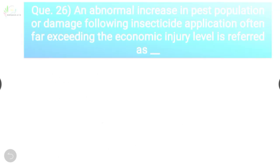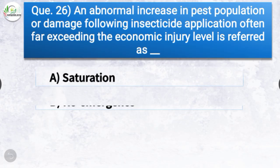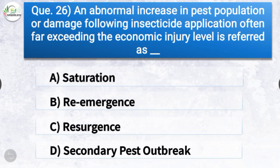Question number twenty-six: An abnormal increase in pest population or damage following insecticide application, often far exceeding the economic injury level, is referred to as? The correct answer is option C, resurgence — an abnormal increase in pest population or damage following insecticide application far exceeding the economic injury level is referred to as resurgence.